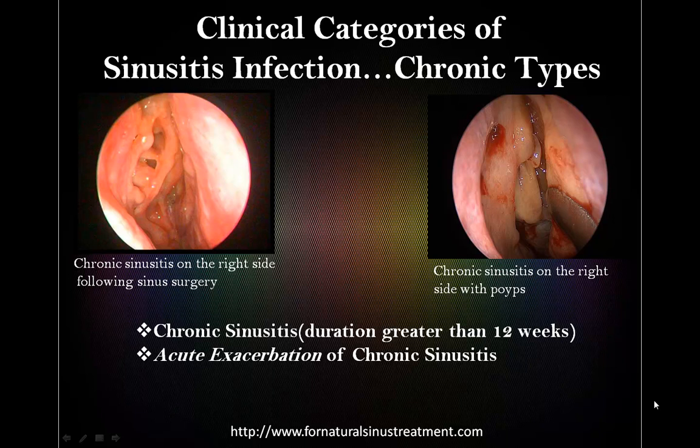Acute exacerbation of chronic sinusitis represents a sudden worsening of baseline chronic sinusitis with either worsening or new symptoms. Typically, the acute — not chronic — symptoms resolve completely between occurrences due to the underlying chronic nature of the condition. Bacterial flora may represent resistance of typical strains, and image-guided culture may be particularly helpful in directing antimicrobial therapy.